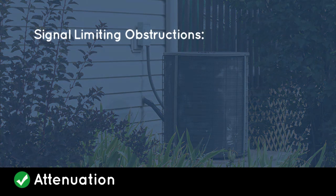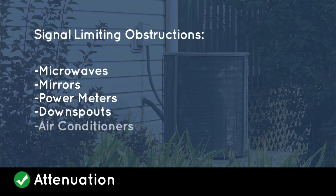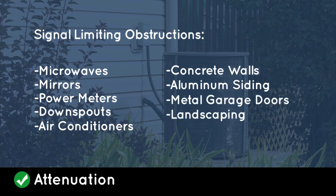Objects that can create interference include a microwave, mirrors, electric power meters, metal downspouts, air conditioning units, concrete walls, aluminum siding, metal garage doors, dense landscaping, or heavily wooded lots.